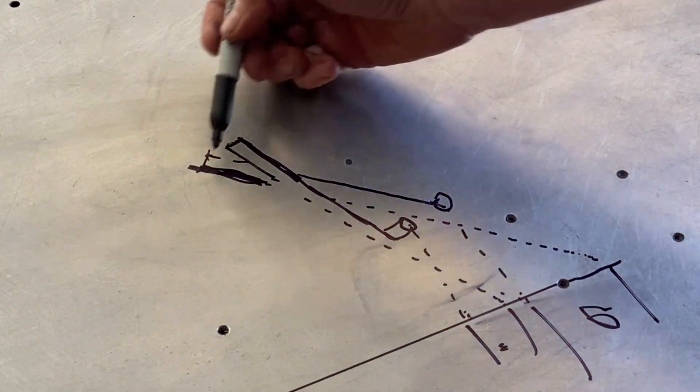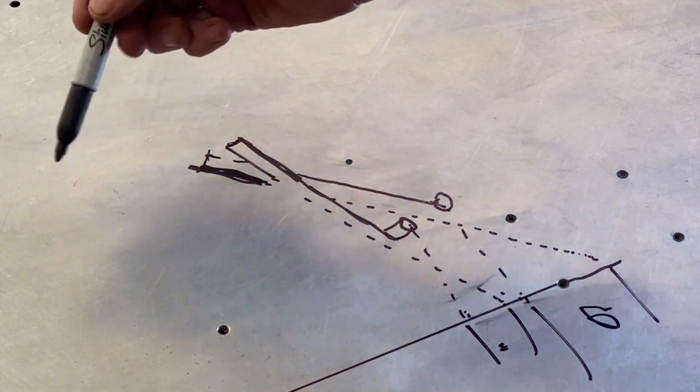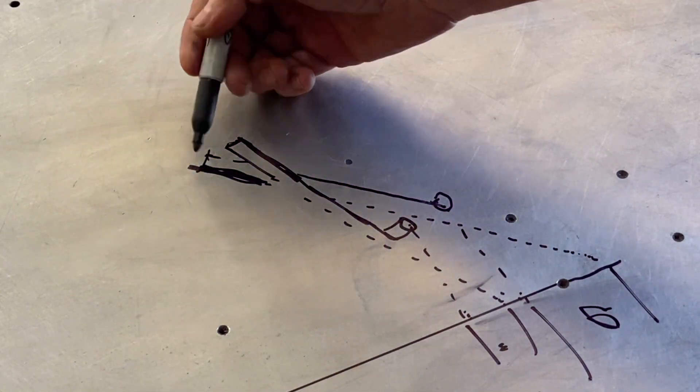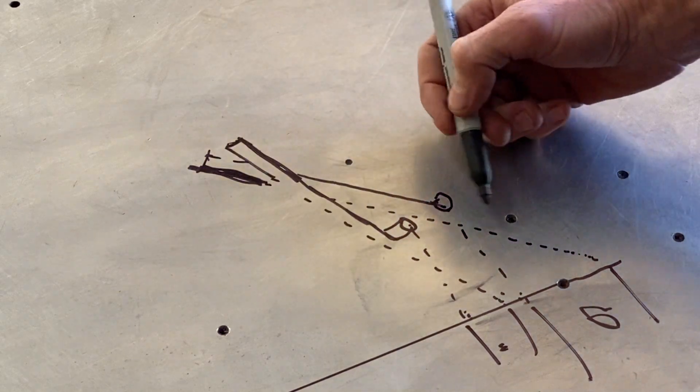Now you can see how much greater that is in trail. So we know that by increasing our rake, or I'm sorry, yeah, increasing our steering rake, we're going to increase trail.